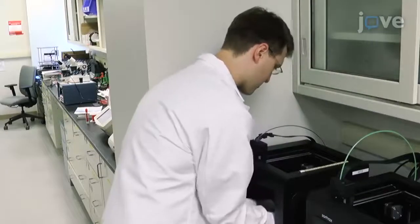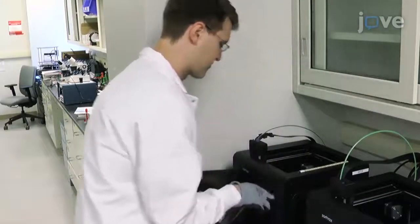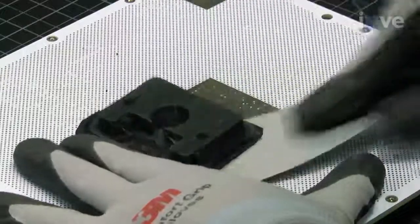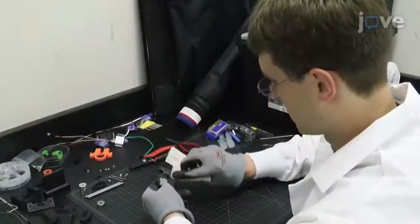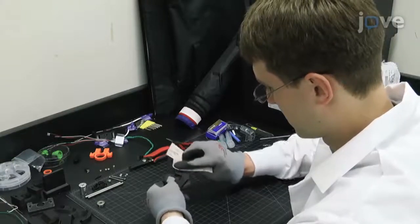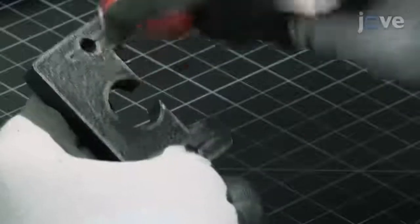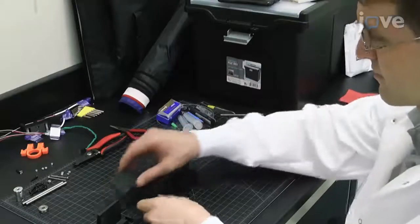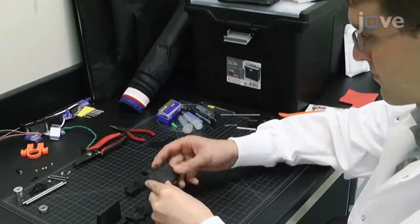Once complete, detach the printed parts from the printing platform of the 3D printer. Remove the printed supporting structure from the finished parts. Smooth the printed components by sanding any rough edges using sandpaper. For best results, use sandpaper with a grit size below 220. Make sure all components are smooth before assembling and ensure that all 7 parts have been printed.